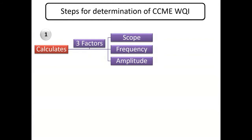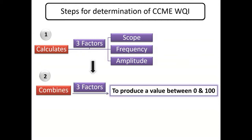Let's look at the steps involved in determining CCME WQI. The CCME WQI is based on a combination of three factors: scope, frequency and amplitude. First we need to calculate these three factors which are discussed in the following slides. These three factors are then combined to produce a single value between 0 and 100 that represents the condition of the water quality. 100 representing best water quality and 0 representing worst quality.